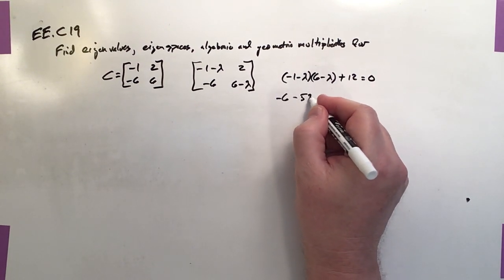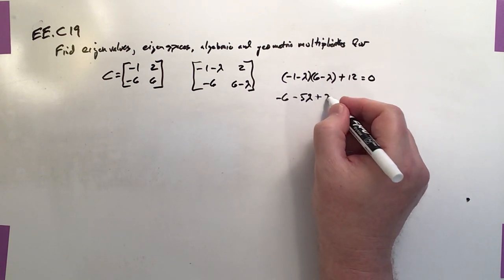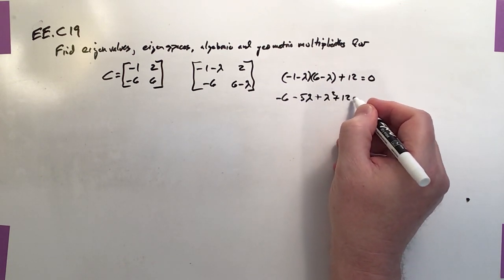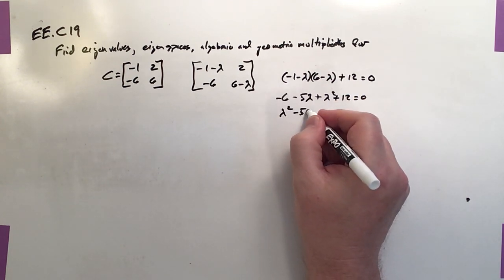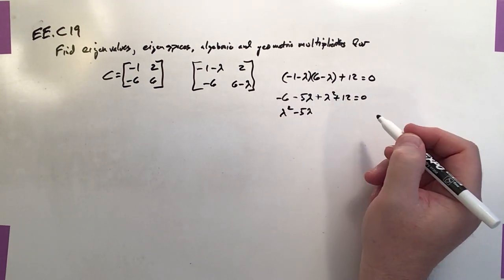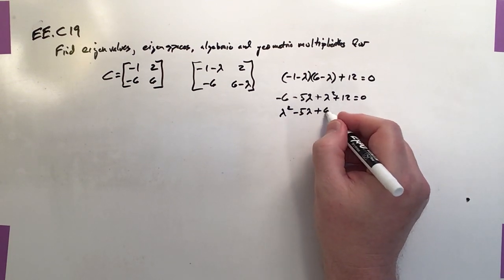Which is minus 5 lambda plus lambda squared plus 12 equals 0. So that's lambda squared minus 5 lambda plus 6 equals 0.